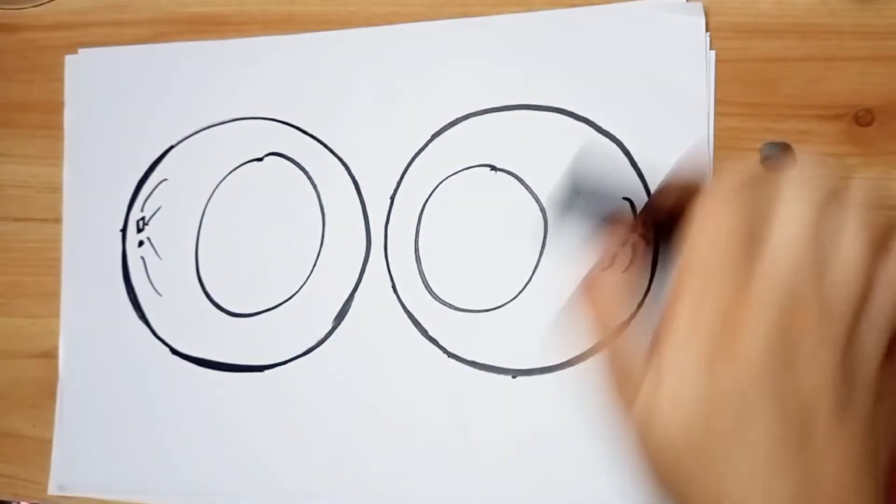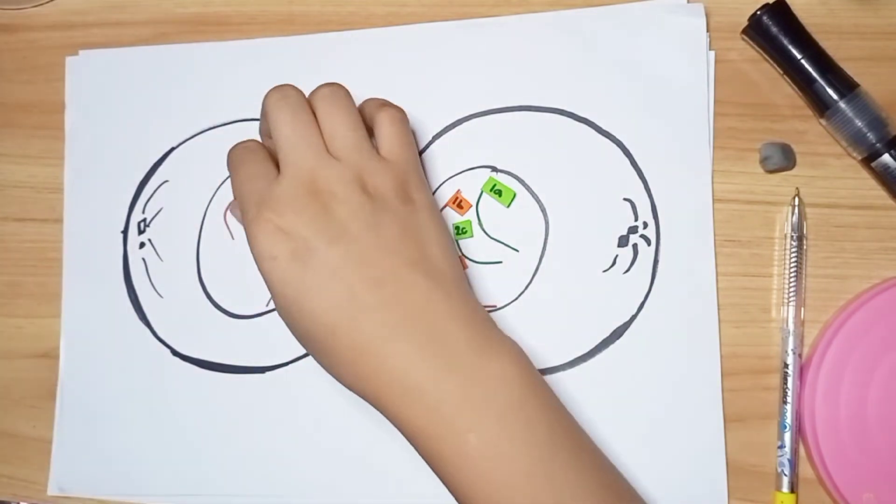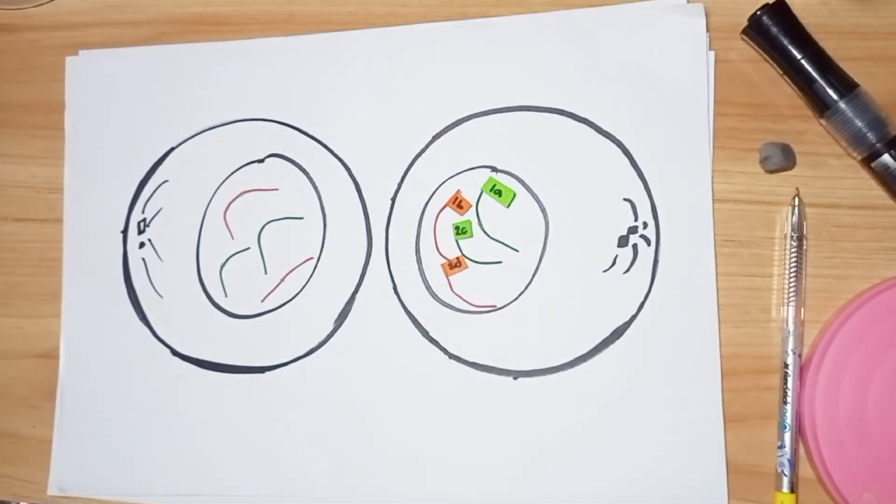Along with telophase, the cell undergoes a separate process called cytokinesis that divides the cytoplasm of the parental cell into two daughter cells.